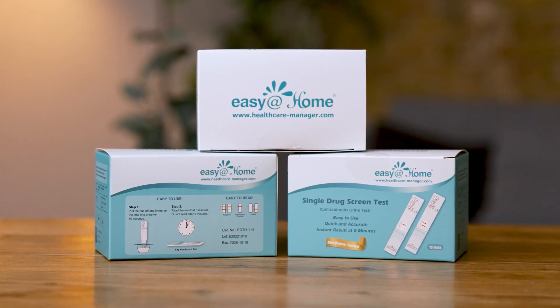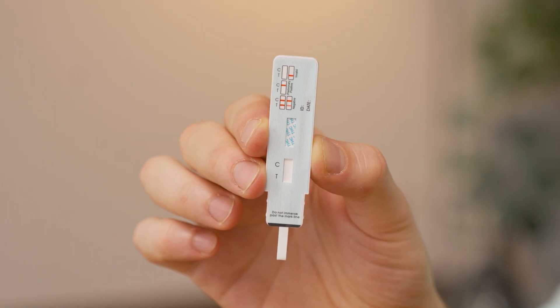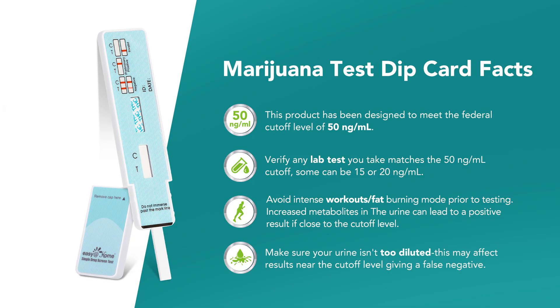It's important to note that if a test line appears on the drug test, regardless of its intensity, the result is considered negative. Our tests are designed as qualitative screening assays, meaning they indicate the presence or absence of a substance rather than its exact concentration. So if you see a faint test line, rest assured that it still signifies a negative result.